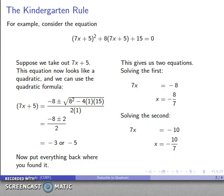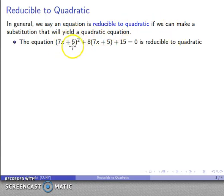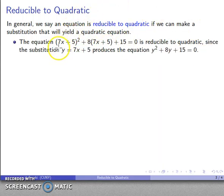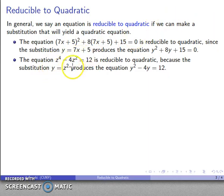This allows us to generalize. In general, an equation is reducible to quadratic if we can make some substitution that transforms it into a quadratic equation. So the equation (7x + 5)² + 8(7x + 5) + 15 is reducible to quadratic because we can substitute y = 7x + 5, giving y² + 8y + 15 — a nice quadratic. Similarly, z⁴ − 4z² = 12 is reducible to quadratic: substitute z² = y, and we get y² − 4y = 12.